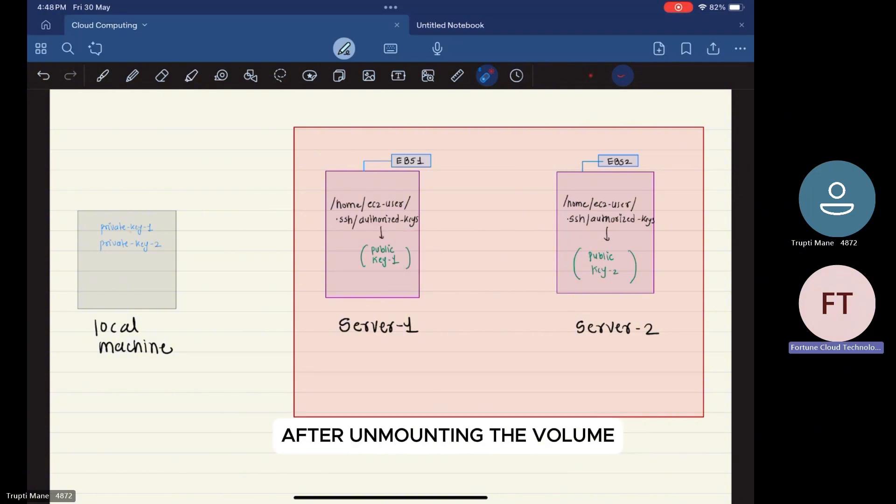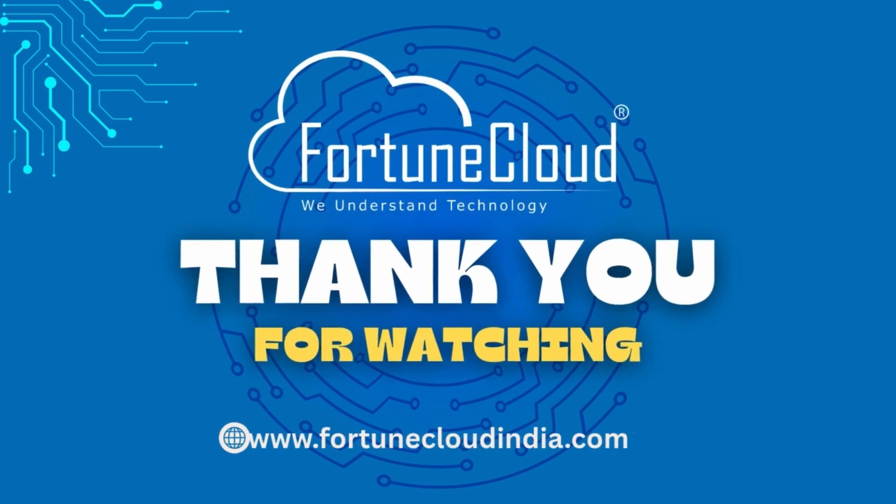After unmounting the volume, I reattached the EBS back to server1. And just like that, I was able to gain the access to server1 again with all the data intact in it.